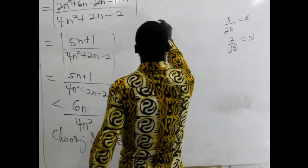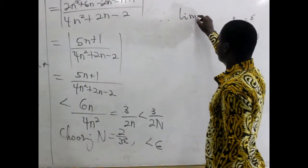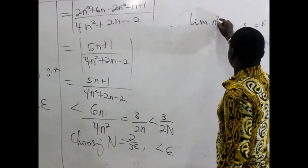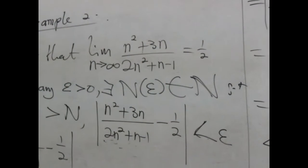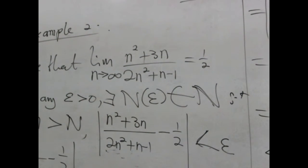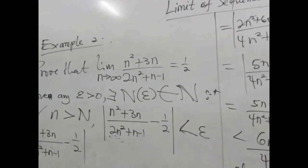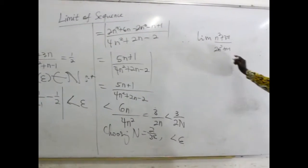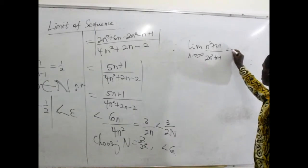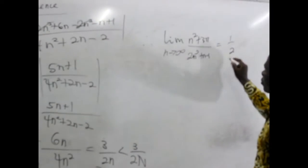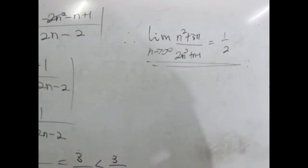Therefore, the limit of the sequence, we realize the limit of n squared plus 3n divided by 2n squared plus n minus 1, as n approaches infinity, is actually equal to half. So the proof is there. That is that. Keep working hard. It is not difficult. You can still do it.